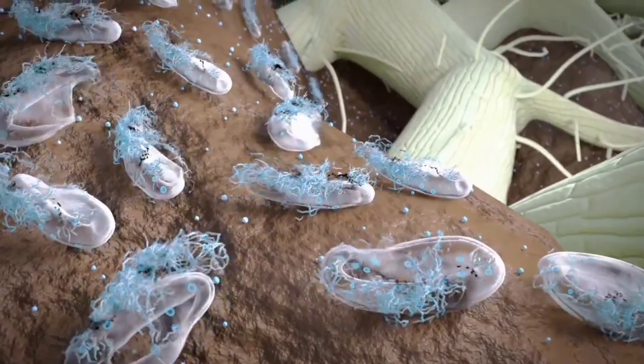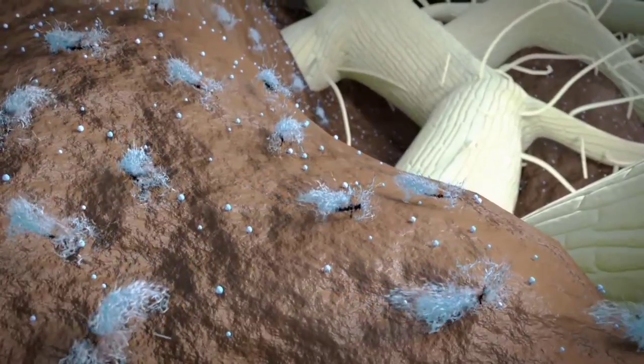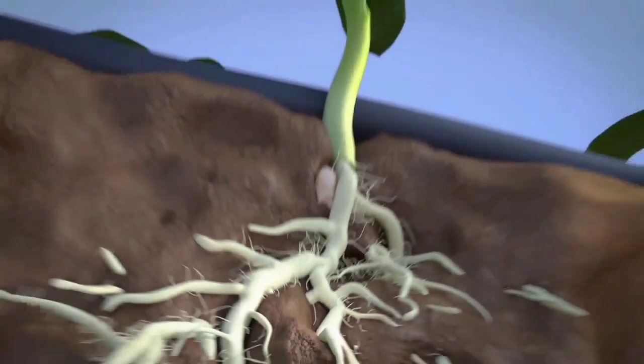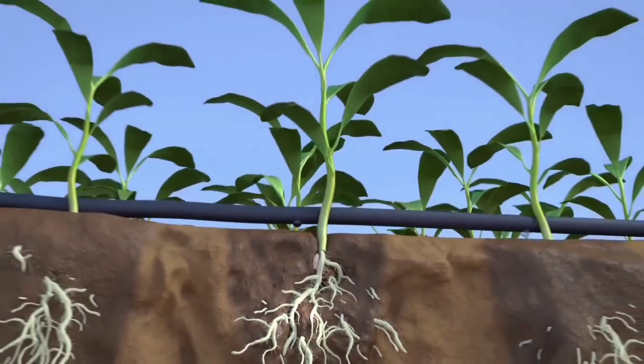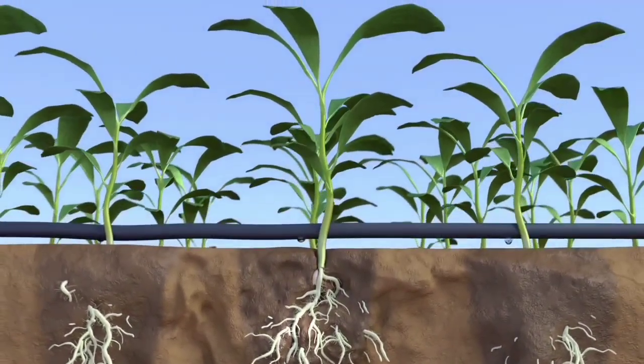The fungus starts to parasitize the nematode eggs and prevents the larvae from hatching and infecting new roots. The healthy root system enables good plant growth and high-yield production.